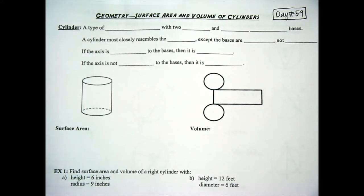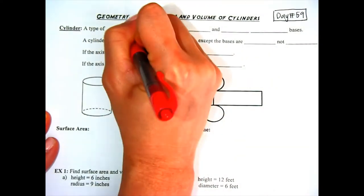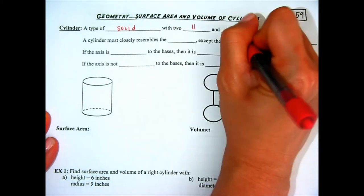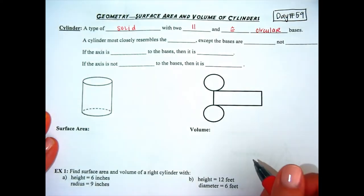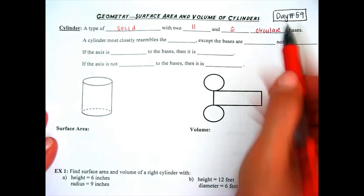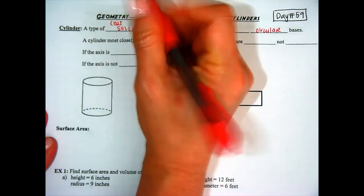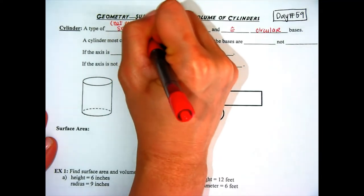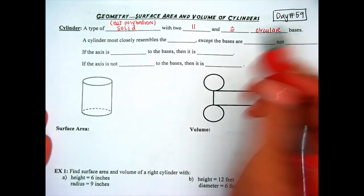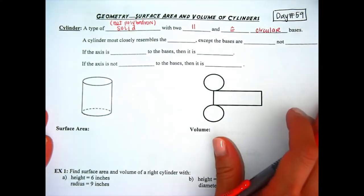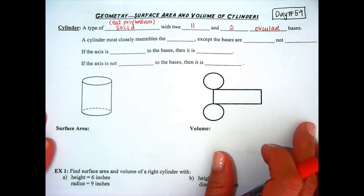Hey guys, so for today's lesson we are going to look at the surface area and volume of cylinders. Cylinders are not polyhedra, but it is a solid. It's a type of solid with two parallel and congruent circular bases. And this is why it's not a polyhedron, because a polyhedron will not have any curves to it, only straight edges. So do not call cones or spheres or cylinders polyhedra — that will be incorrect. You could just refer to them as solids.